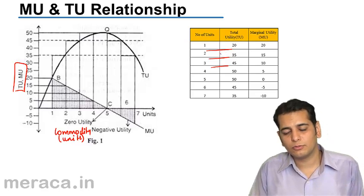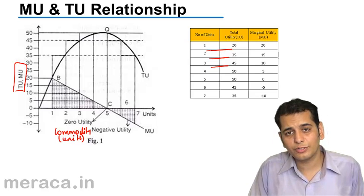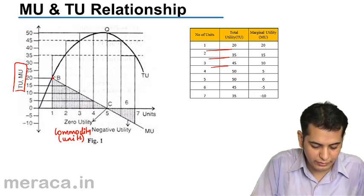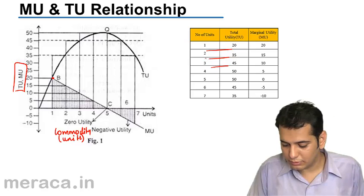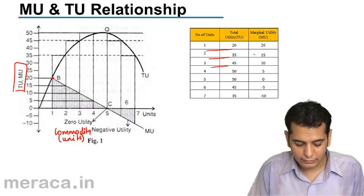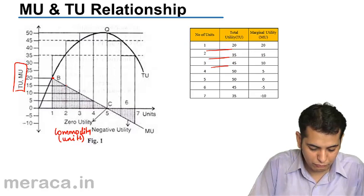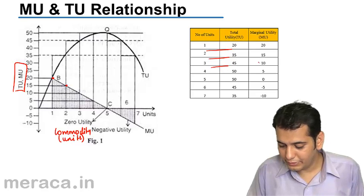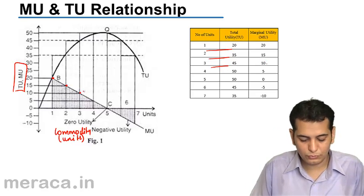So let's plot the points. Our first coordinate is 1 and 20. So 1 on x-axis and 20 on y-axis, we get the point here. The next point is 2 and 15. 2 on x-axis and 15 on y-axis. The next point is here. 3 and 10, this is the point.